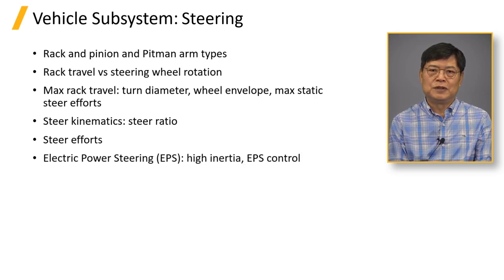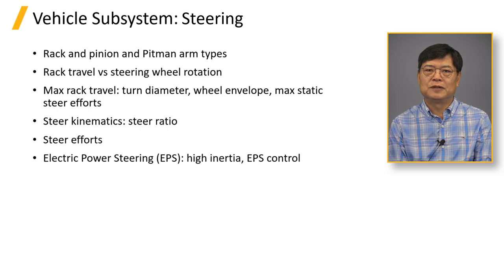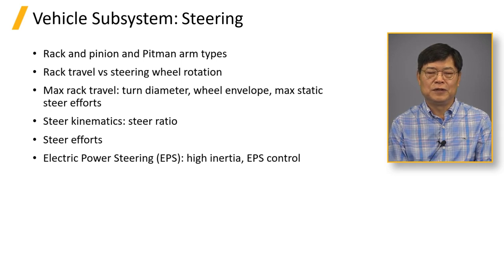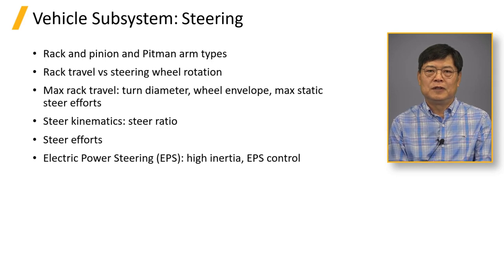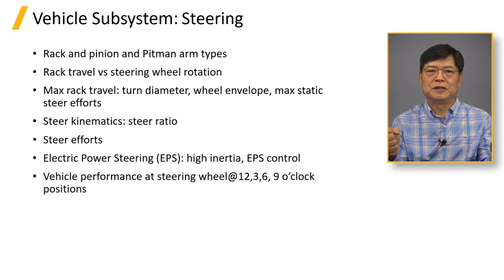The electric motor for the electric power steering (EPS) system has a high gear ratio. Although the motor itself has small inertia, the equivalent inertia incorporating the high gear ratio adds significant rotational inertia to the steering system. The EPS system can control delicate steering performance issues, and steering suppliers offer black-box models for EPS in vehicle dynamics simulation. The model should be ready to report acceleration at the 3, 6, 9, and 12 o'clock positions at the steering wheel.